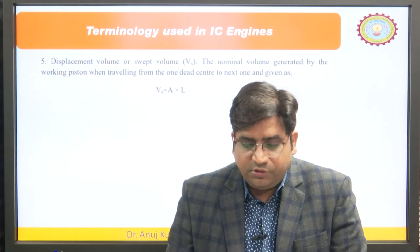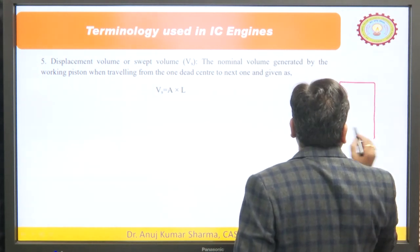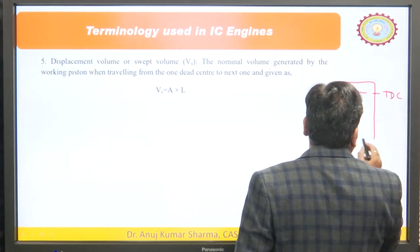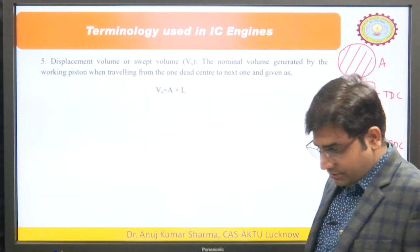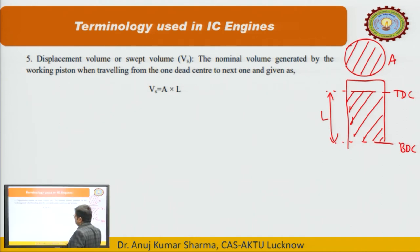Next is the displacement volume or swept volume — a very important parameter. It is equal to the piston area A multiplied by the stroke length L. The displacement volume is the volume swept by the piston as it moves from top dead centre to bottom dead centre. So the swept volume equals the product of the piston area and the stroke length: V_s = A × L.